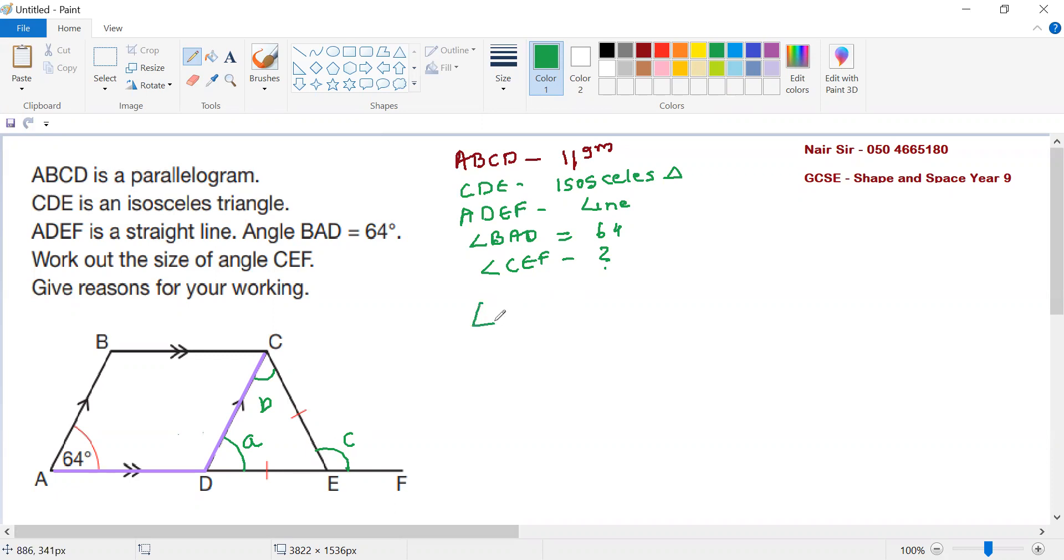Angle A is equal to 64 degrees by corresponding angles. Since it's an isosceles triangle, angle A equals angle B.